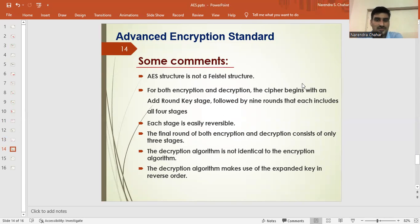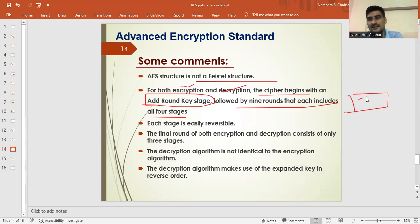Some comments about the AES. This is not based on the Feistel structure. The DES is based on the Feistel structure, but this is not. For both encryption and decryption, the cipher begins with an add round key stage followed by nine rounds that each includes all four stages. Nine stages are here. In each round, there are four stages that are performed. Each stage is reversible here. We can reverse every stage. Just like we have done some shifting, we can reverse the shifting back.